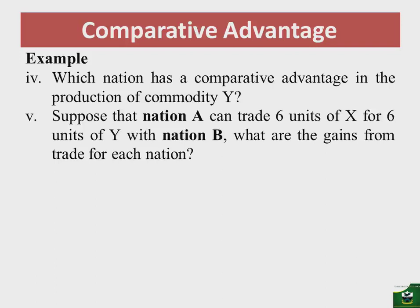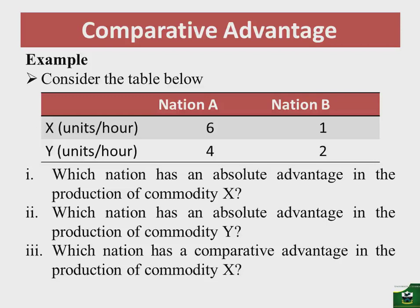If nation A specializes in the production of commodity X and nation B specializes in the production of commodity Y, it means nation A will channel the one hour that was supposed to be used for the production of Y to the production of X. With that done, nation A will produce 12 units of X and zero units of Y.